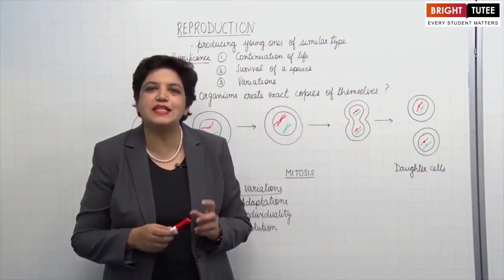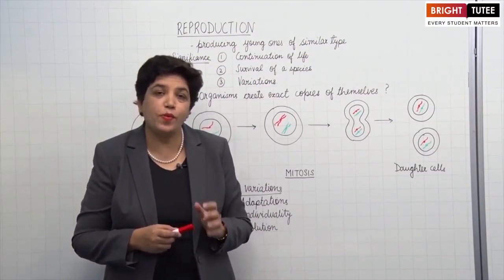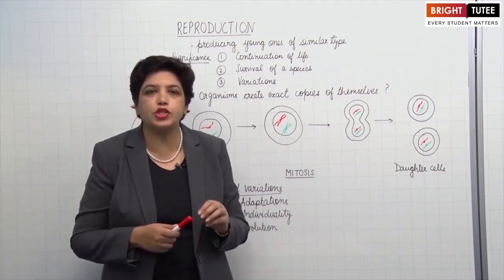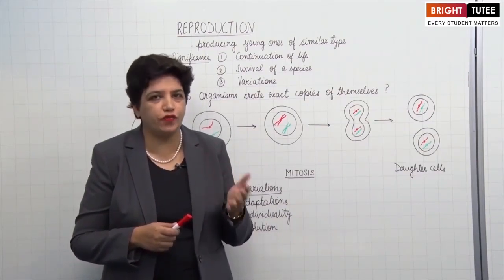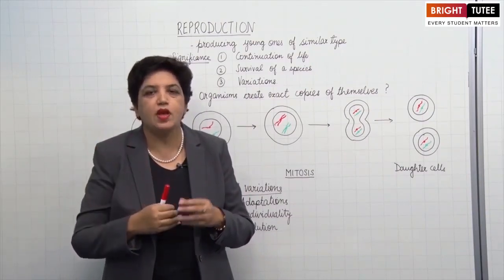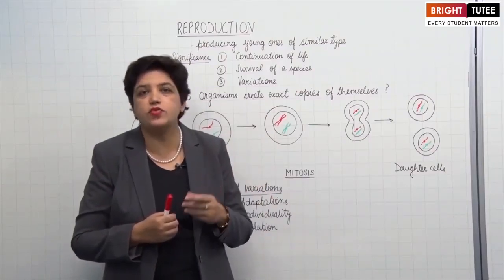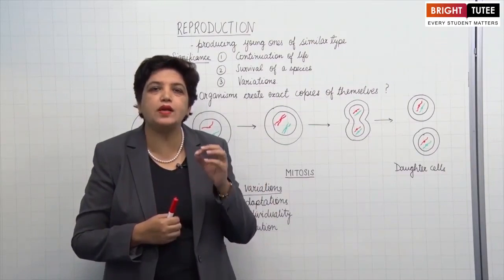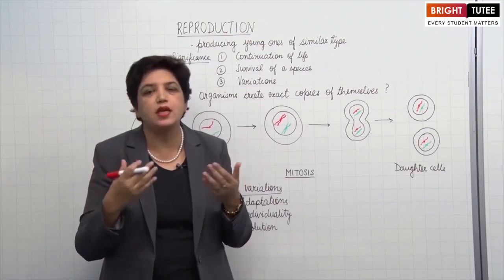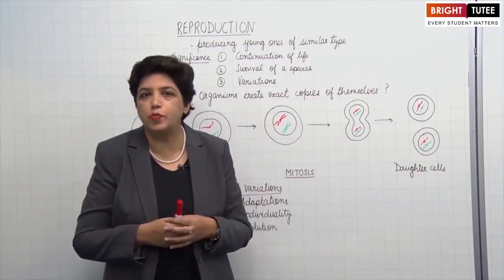Hello students, today we will study about the next chapter of biology, that is Reproduction. Before we start the chapter, let us understand what is Reproduction. Reproduction is formation of new generation of young ones of the similar type from the grown-up individuals. For example, if you sow a seed of a sunflower plant, a new plant will grow — this is Reproduction. A unicellular amoeba divides into two cells to form two new daughter cells — this is also Reproduction. A cat giving birth to a kitten — this is also Reproduction.